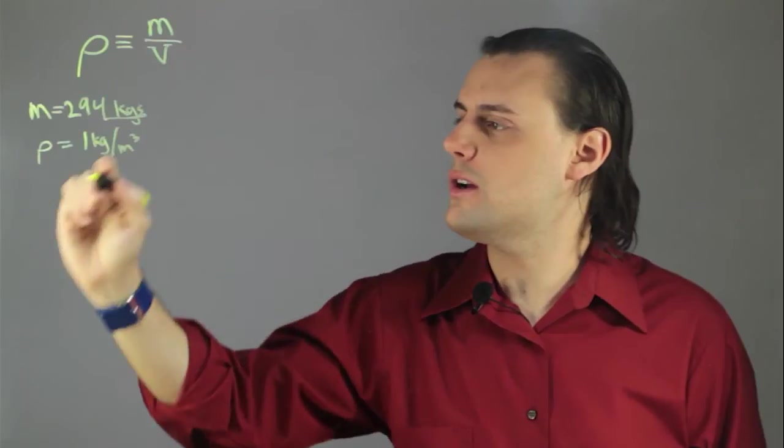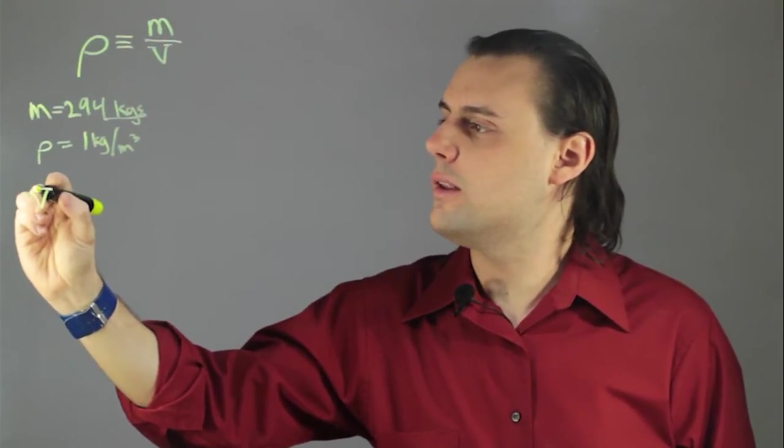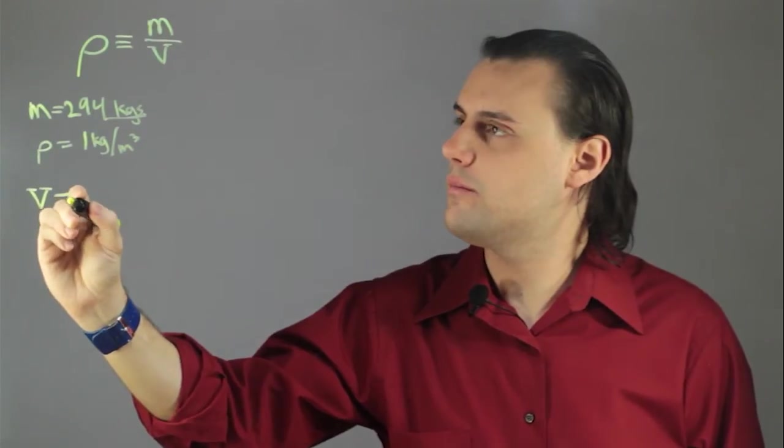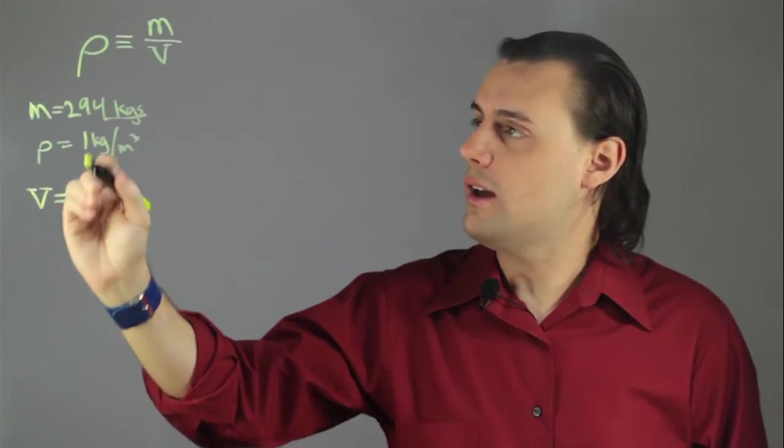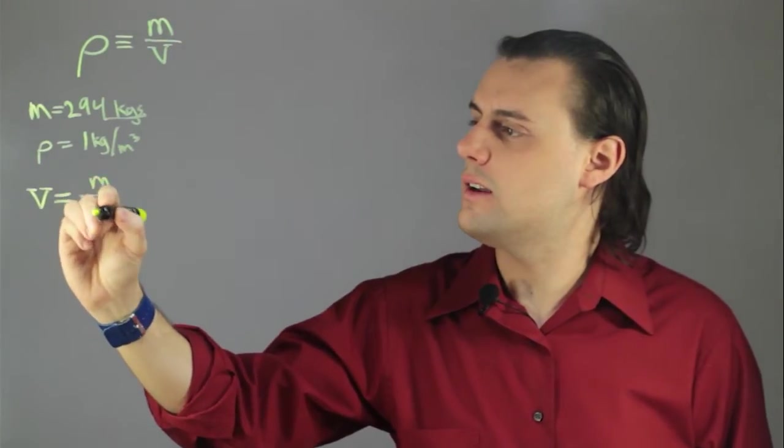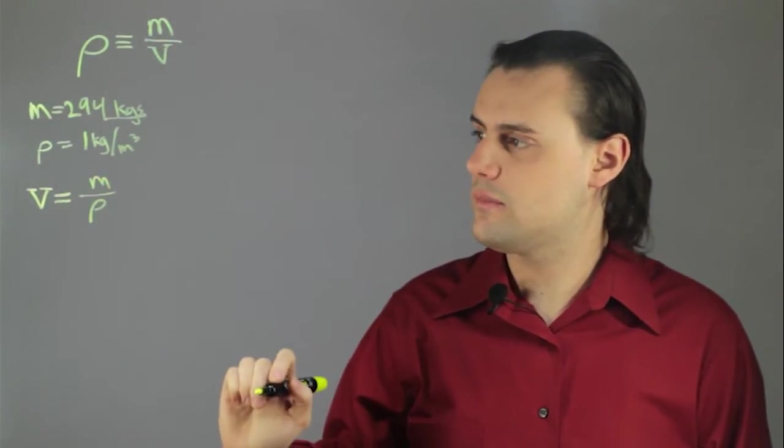Going off of this expression, I multiply both sides by the volume and divide by the density. I end up with the mass divided by the density.